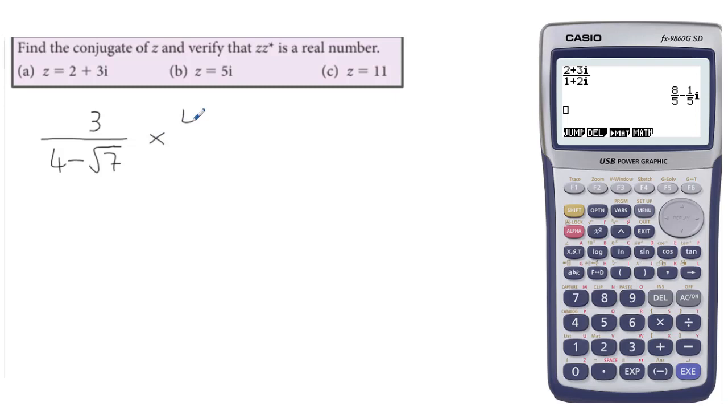So you would multiply it by 4 plus root 7 over 4 plus root 7. So these two, the 4 minus root 7 and the 4 plus root 7, they're radical conjugates of each other.